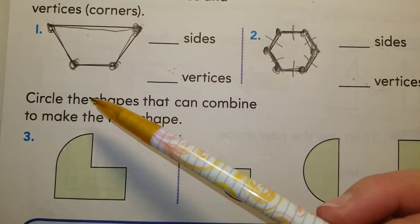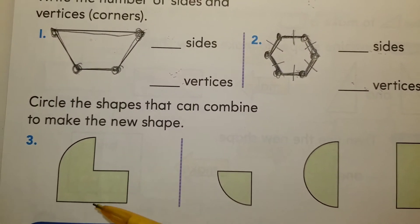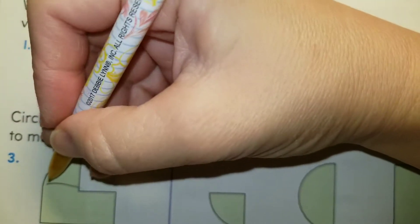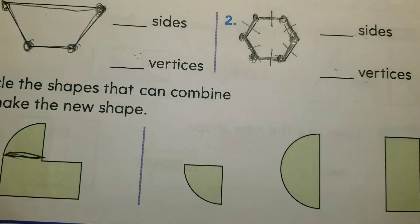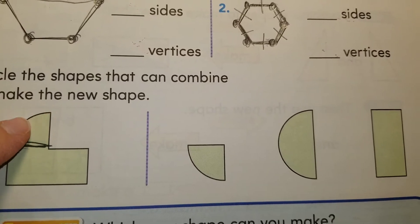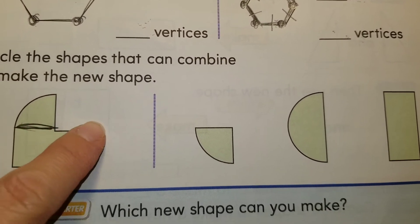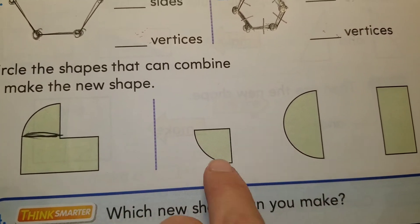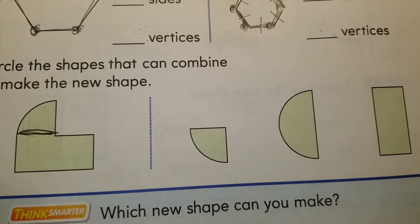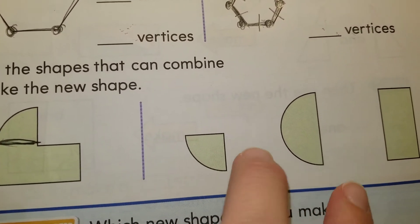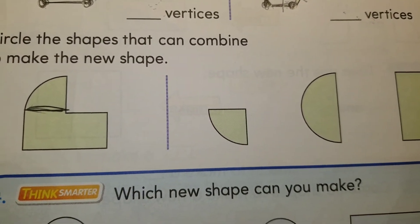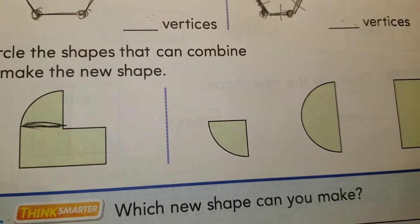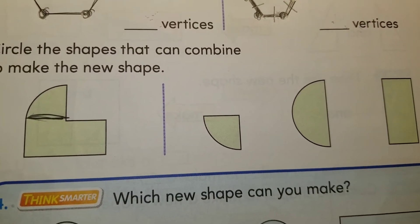Number three: circle the shapes that can combine to make the new shape. What are the shapes that you can see here? We're going to draw lines. Do you see this shape? This is a quarter of a circle. Out of the three shapes that you have here, you are going to choose two of them. Two of these shapes form this shape that you see here. Circle the two shapes that form it.